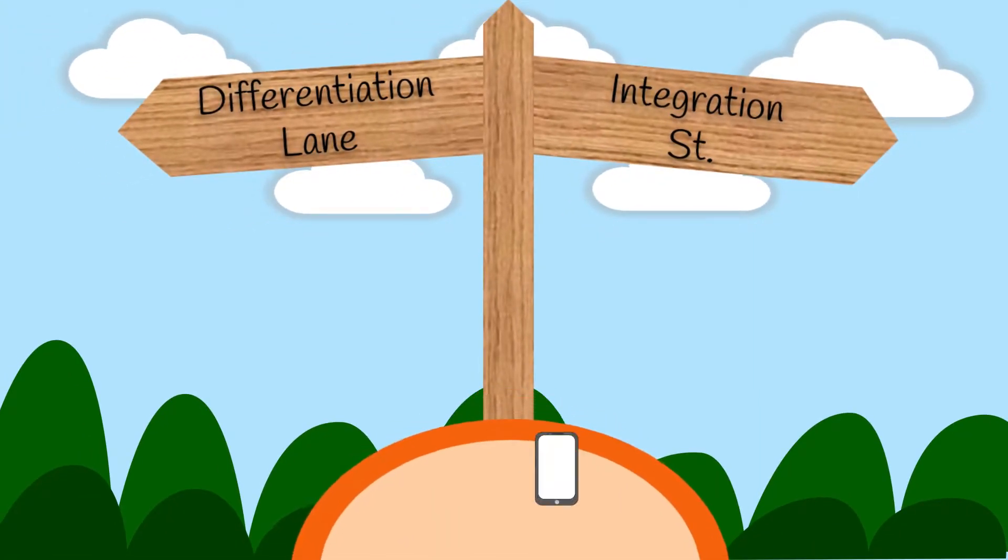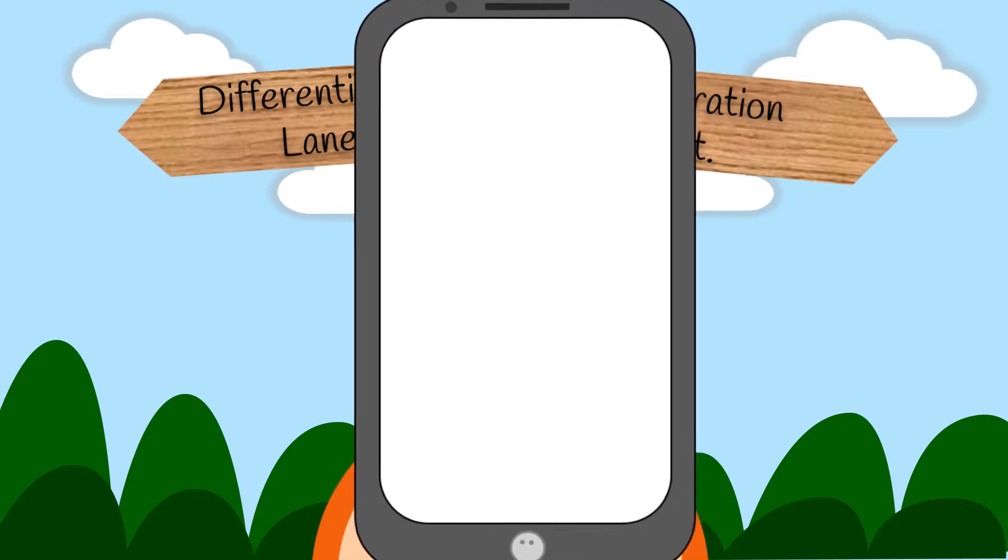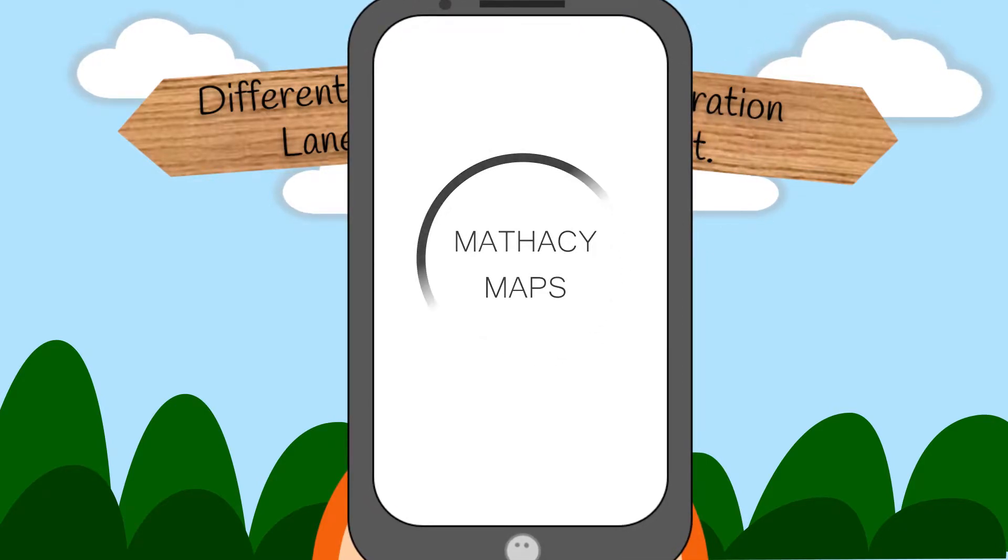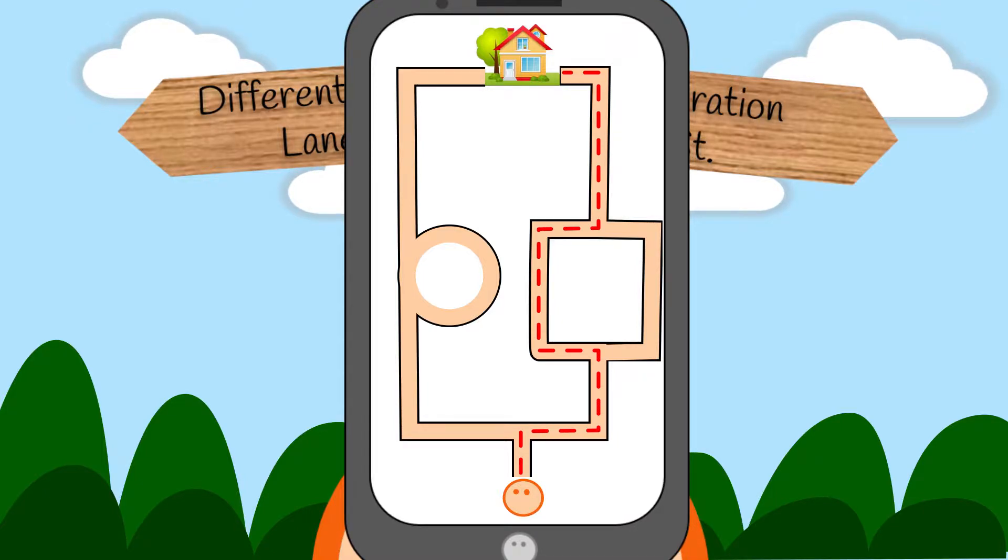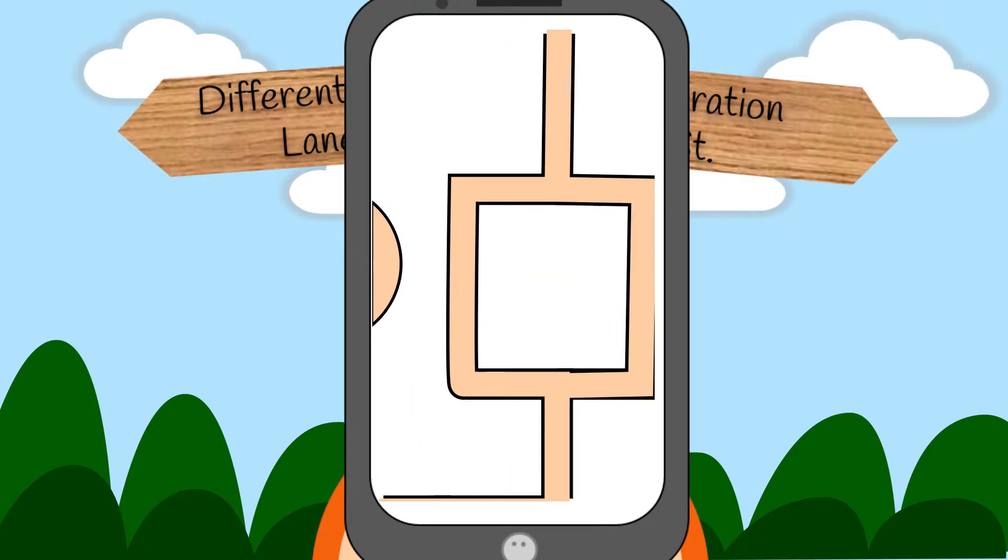So naturally you pull out your phone and you load the extremely reliable Mathesi maps and once it is loaded it tells you that the fastest way home is along integration street. And looking at the map further you seem confused why there are two roads which just start and converge at the same points so you zoom in to inspect it further.